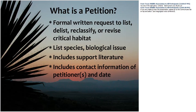A petition is a formal written request to list, delist, reclassify, or revise critical habitat for a species. At minimum, petitions must list the species, the biological issue associated with that species, and should include supporting literature and contact information. Recently, the services have proposed changing requirements to limit a petition to one species, and to consult with state natural resource agencies and provide all relevant data to support the petition before filing.